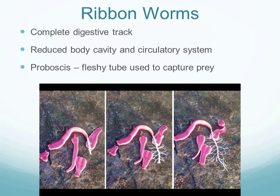Ribbon worms have a complete digestive tract and a reduced body cavity — slightly more developed than flatworms. They have a simple circulatory system and a proboscis — a sticky, tongue-like appendage that extends from the mouth, captures food, and retracts to bring it back for digestion.